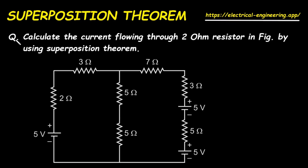The question is: calculate the current flowing through the 2 ohm resistor in the figure by using superposition theorem. So we have to find the 2 ohm resistor current by using superposition theorem.